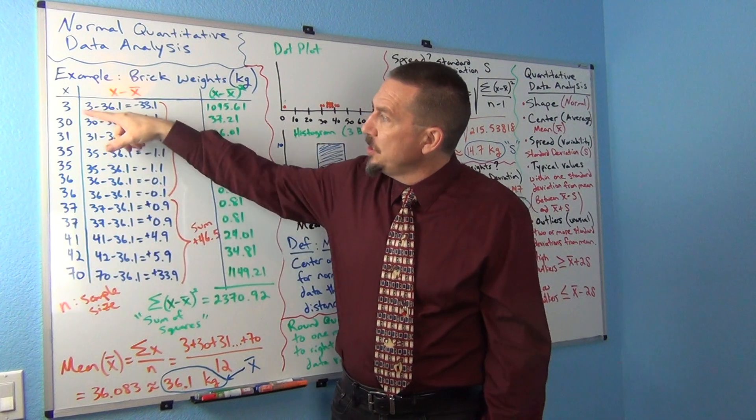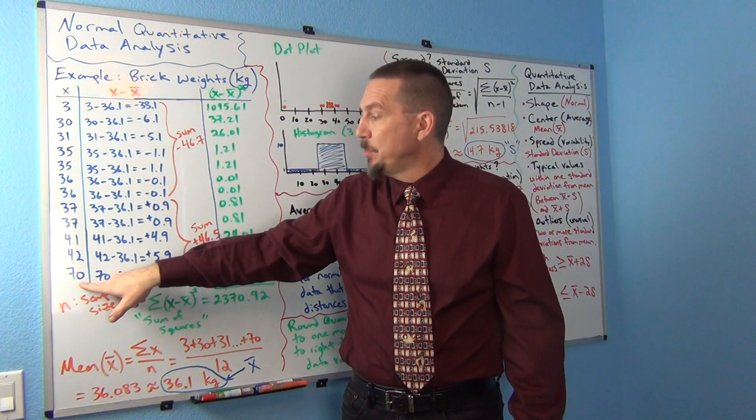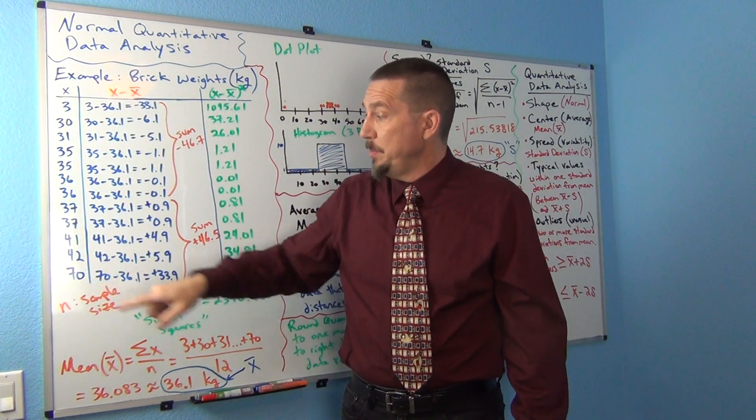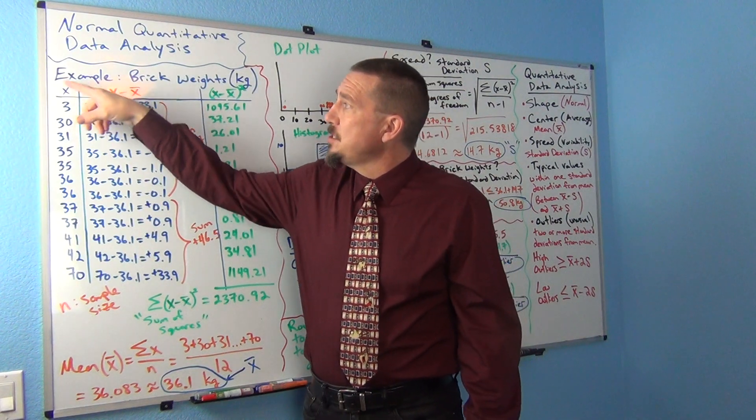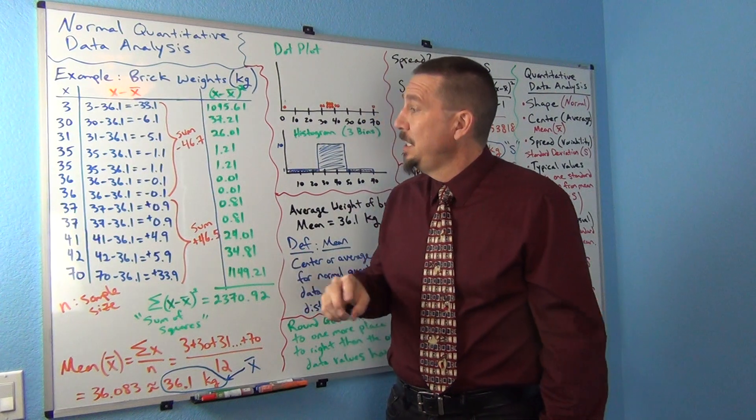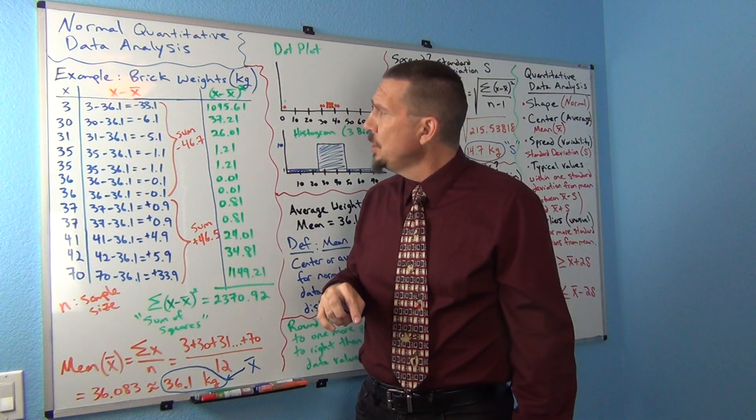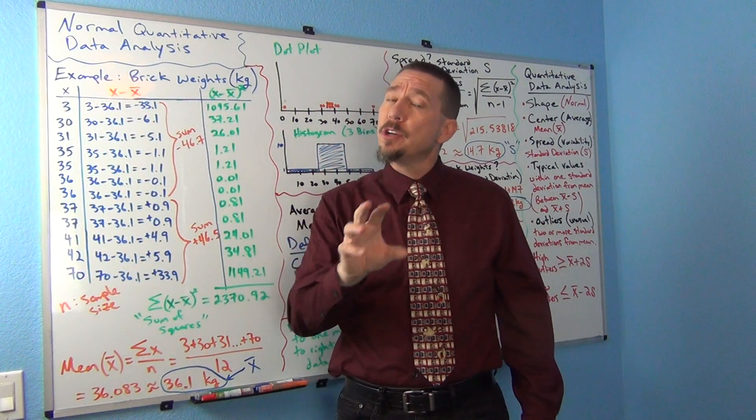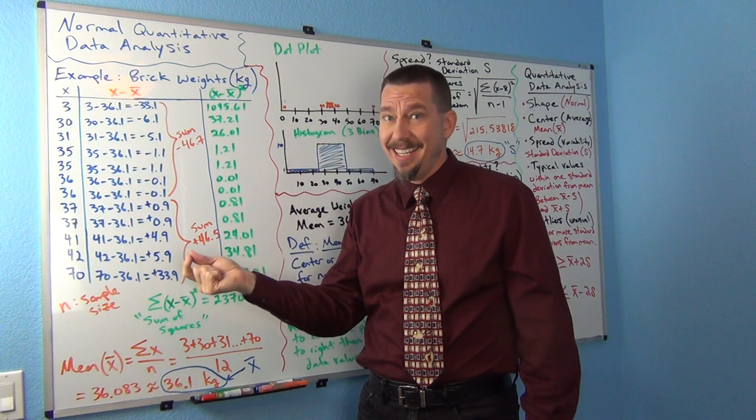The smallest one was three kilograms and the heaviest brick was 70 kilograms. So that's a really big brick. So if we look at this X, X sometimes refers to the numbers in the data set when you're dealing with quantitative data. So one of the first things, if I'm analyzing quantitative data, the first thing I really want to know is the shape of the data set.